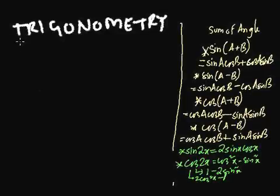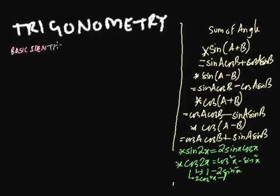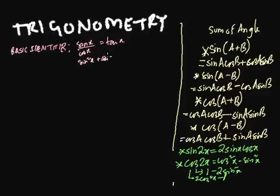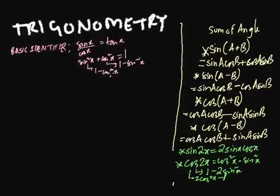We need to do three sums as fast as we can, but first let's recap what we have done so far. We have talked about the basic identities: sine theta divided by cos theta is identical to tan theta, then sine squared x plus cos squared x equals one, from which we get cos squared x equals one minus sine squared x, and sine squared x equals one minus cos squared x.